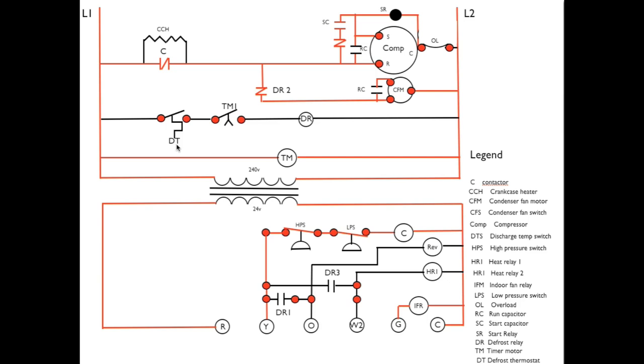The defrost thermostat is mounted on the outdoor coil. It has to be below a certain temperature of 32 or 26 degrees. Both of these have to be closed to energize the defrost relay.